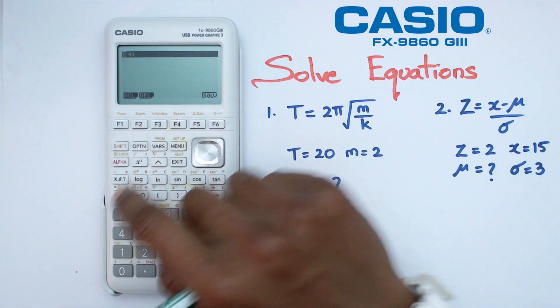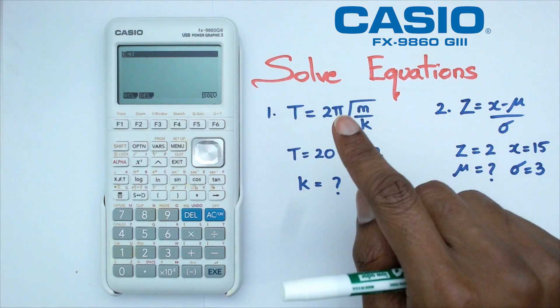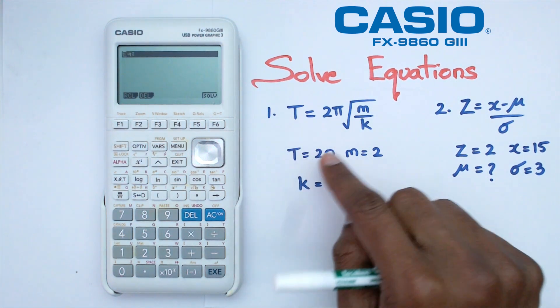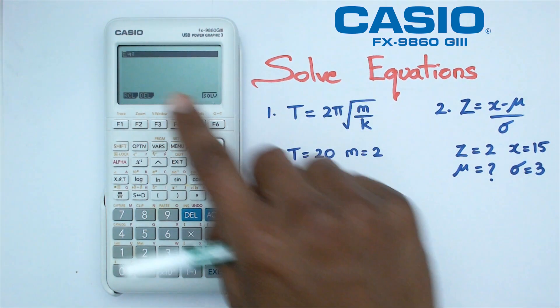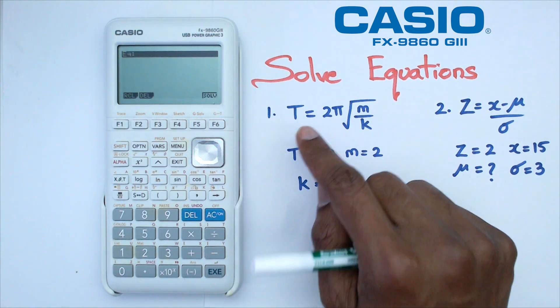Once you go in there, you can actually input this entire equation, and then substitute your values, and then figure out what the value of k is. I'm going to put this equation into the graphics calculator, and for the letters I'm actually going to use alpha.